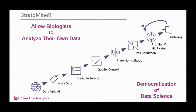We have solved this problem by developing a web-based data analytics platform called Strataminer. Strataminer allows biologists to independently mine the numeric data generated by Encarta by guiding them through an intuitive data mining workflow. They can upload their data, separate metadata from analytical data, discard data that isn't useful, and carry out quality control. They can then move on to statistical methods such as plate normalization, data transformation, and scaling, and on to more advanced data reduction methods. In the same way that Encarta democratizes advanced image analysis, we're democratizing advanced statistics and data science.